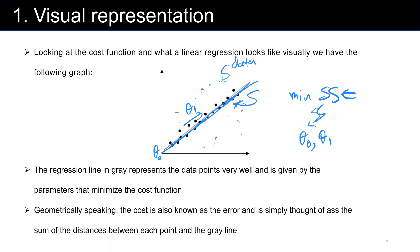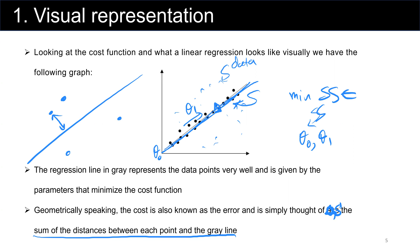Geometrically speaking, the cost is also known as the error and is simply the sum of the distances between each point and the gray line. We can label these distances d1, d2, d3, d4, and so on. The regression line is the line that minimizes the sum of these distances to all given data points.